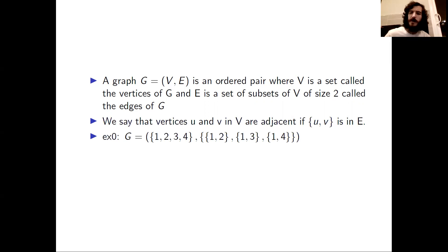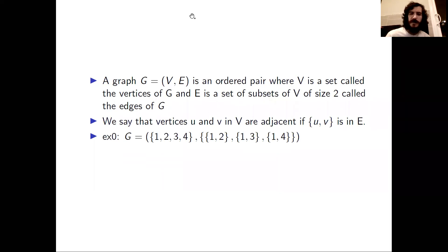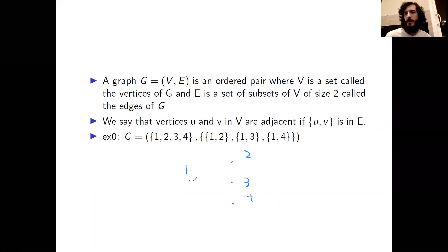For example, consider the graph written here. Its vertex set consists of the vertices labeled 1, 2, 3, and 4, and its edge set consists of the edges {1,2}, {1,3}, and {1,4}. We can draw this with vertex 1 on the left and vertices 2, 3, and 4 on the right, and then represent each edge with a segment. That is typically how we will represent a graph.